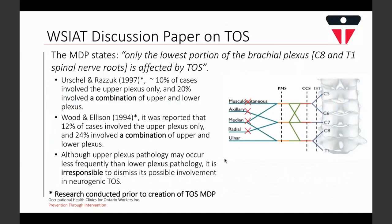The medical discussion paper states that only the lowest portion of the brachial plexus, the C8 and T1 spinal nerve roots, is affected by TOS. However, research available even prior to the paper's publication showed that the upper plexus or the entire brachial plexus may be affected. Approximately one-third of cases involved either the upper plexus alone or a combination of both upper and lower plexus. Although upper plexus involvement is less frequent, it is irresponsible to dismiss its involvement in TOS.